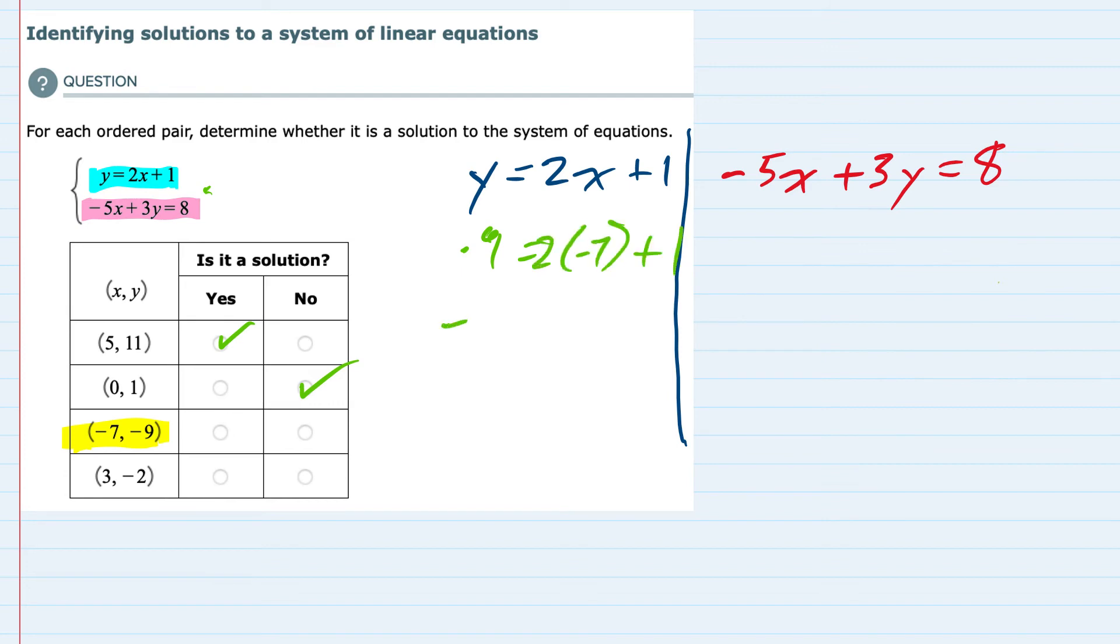The left hand side is negative 9. The right hand side is 2 times negative 7 is negative 14 plus 1, which is negative 13.